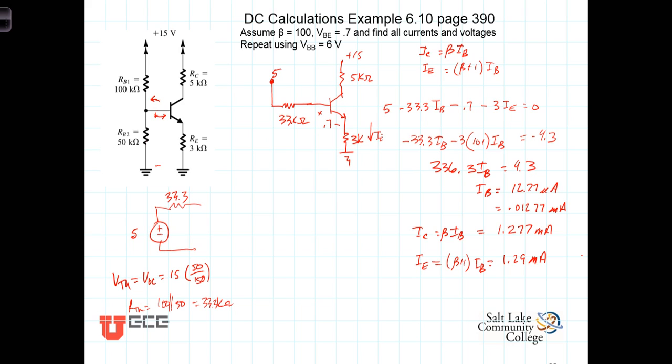With those, we can calculate that V sub C, the voltage at the collector, will be the 15 volts minus 5K times I sub C. I sub C was 1.277 milliamps, and that gives us a value of V sub C equal to 8.61 volts. V sub E is just the voltage here, which will be I sub E times 3K, and that turns out to be 1.29 milliamps times 3K, which equals 3.87 volts.